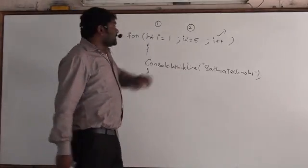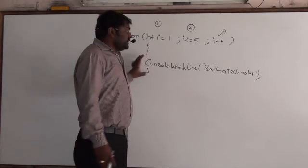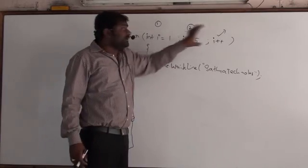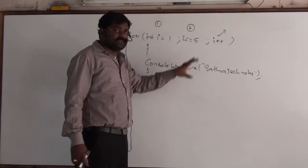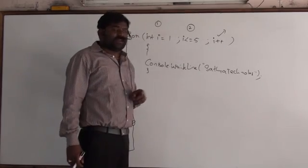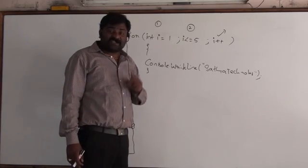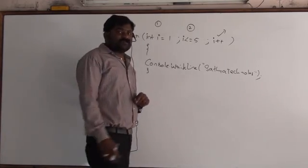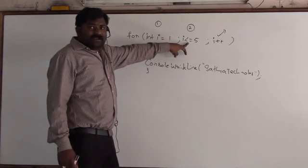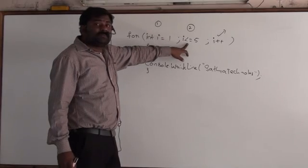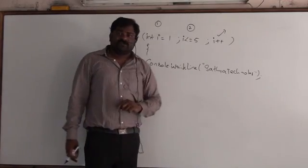Coming back to the for loop: first part is initialization, second is condition, third is statements, fourth is increment — then condition, statements, increment — and this loop repeats again and again until the condition is satisfied. Initialization is done only one time, that is the first time.